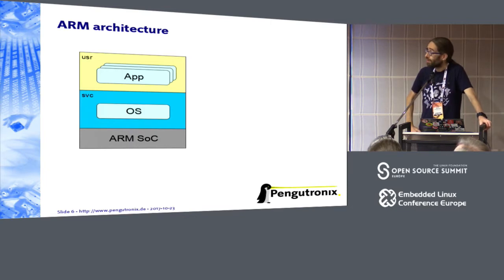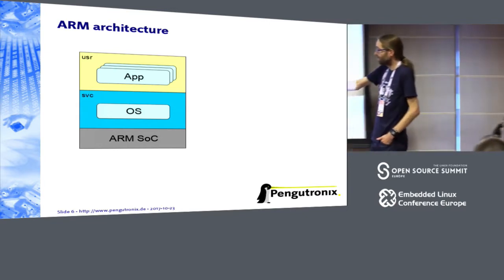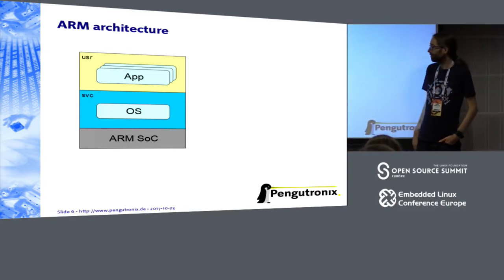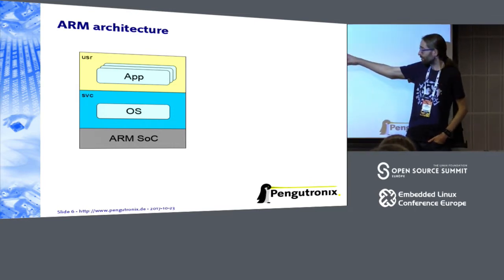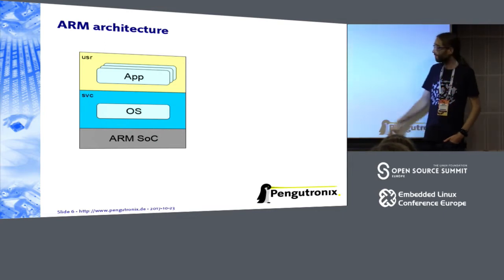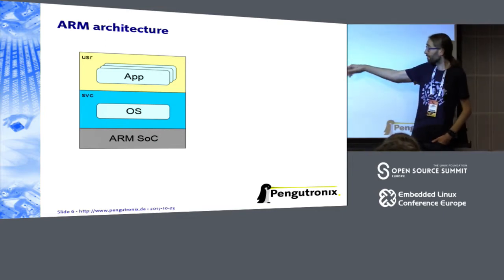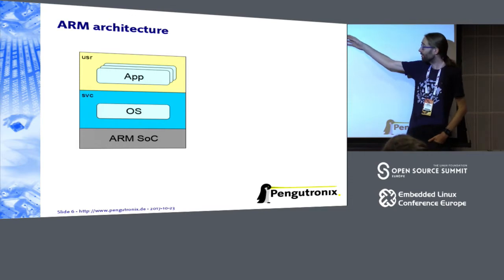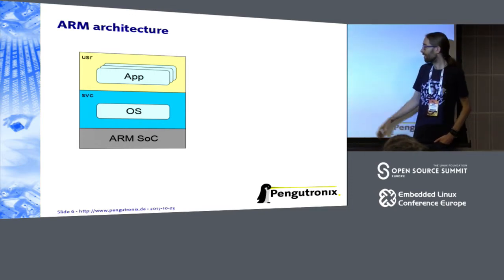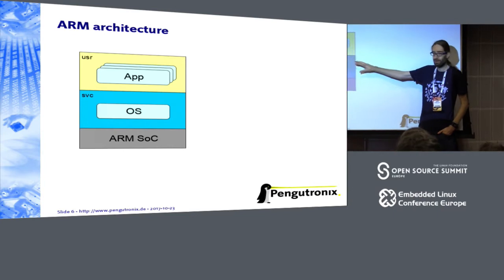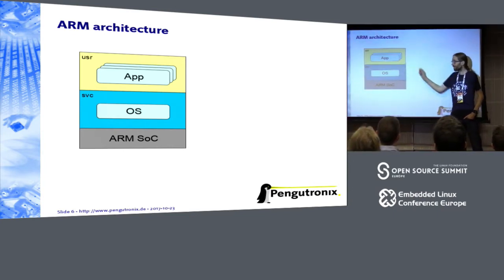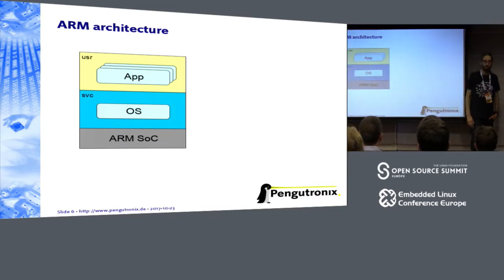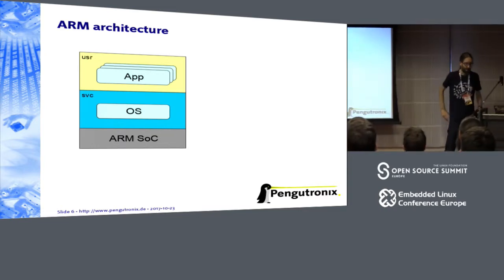Let's look at the ARM architecture as it's normally used. You have an ARM SOC at the bottom — that's the hardware. In the supervisor mode, the privileged level, there is the operating system, Linux for us. In the unprivileged user space, there are other applications. The kernel has control over the hardware and isolates the apps from each other. This is how a normal, traditional ARM system looks.